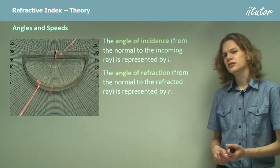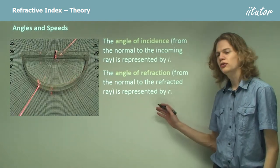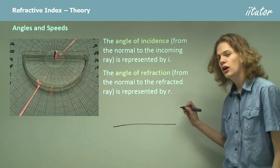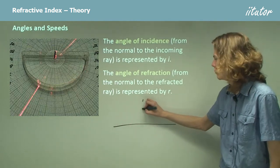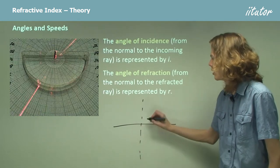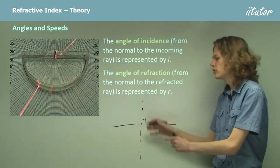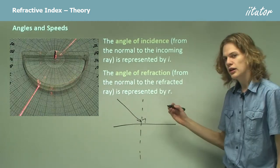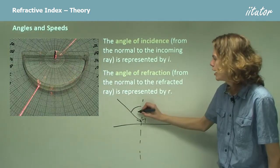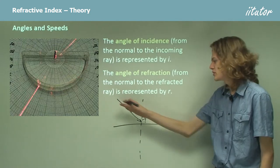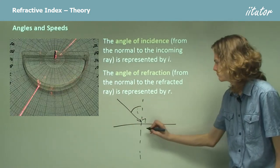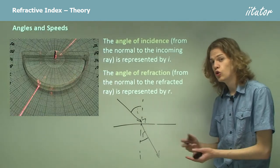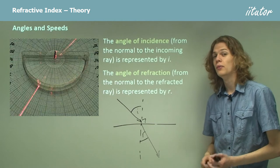The angle of refraction R is the angle between the refracted ray and the normal. If here's the boundary we're passing between, then the normal is the 90-degree line perpendicular to the surface. If the incident ray comes in, the angle I is not the angle between the incident ray and the boundary. Similarly, R is the angle between the refracted ray and the normal, not between the refracted ray and the boundary.